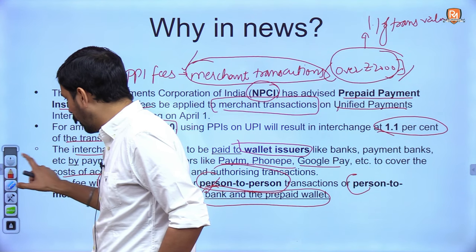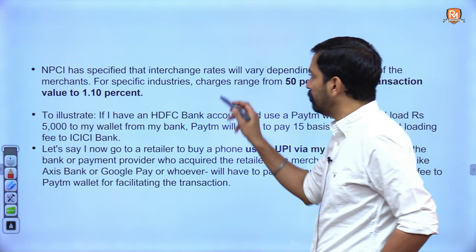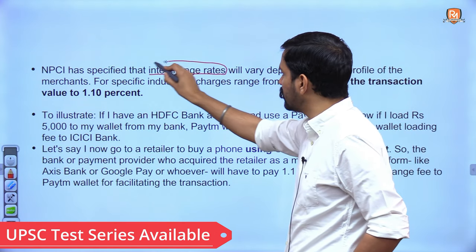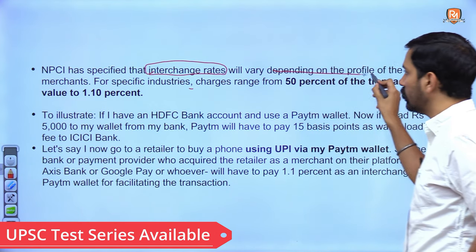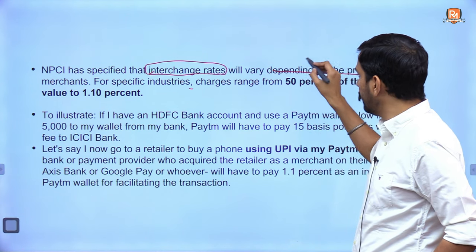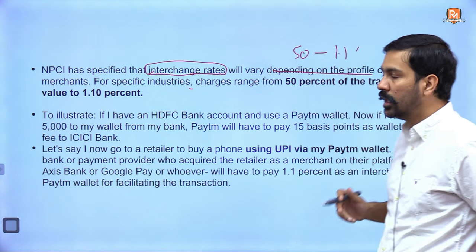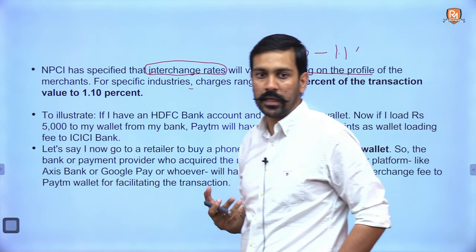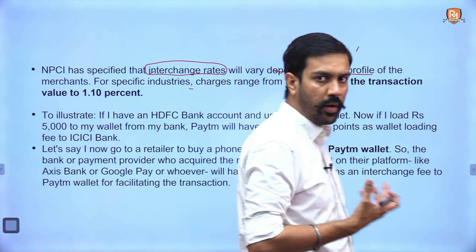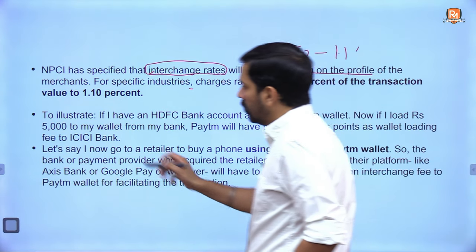NPCI has specified that interchange charges will depend on the profile of merchants, and they will vary from 0.5% of the transaction to 1.1% of the transaction value. To simplify how this works, we have an illustration here.